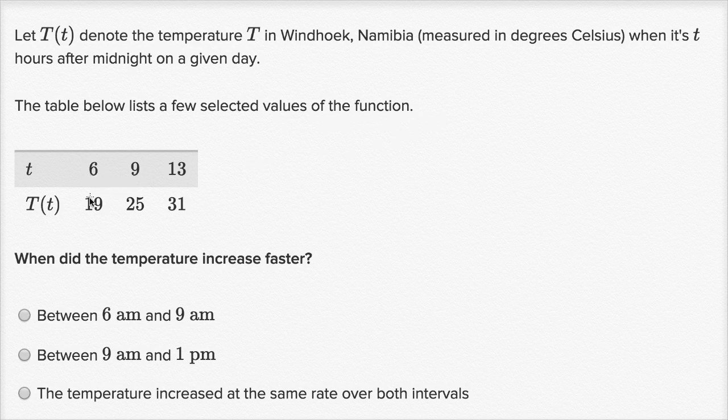When it's 6 hours after midnight, our temperature is 19 degrees Celsius. 9 hours after midnight or 9 a.m., 25 degrees Celsius. 13 hours after midnight, which is the same thing as 1 p.m., our temperature is 31 degrees Celsius.